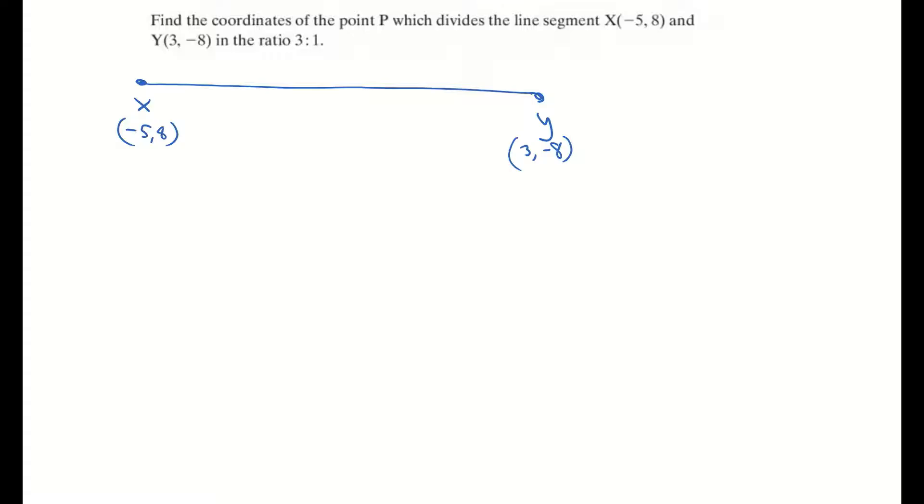The question then is basically trying to get us to find the point P, which sits on that line segment and it's in the ratio 3 is to 1. So I'm just going to mark that on my picture here. So I'm going 3 is to 1. So basically, I need to find the coordinates of that point P.